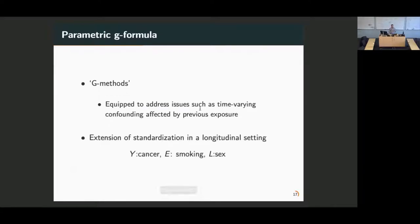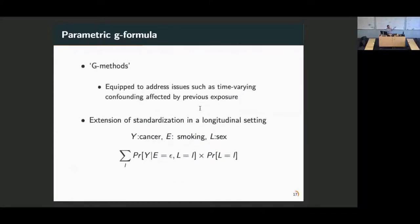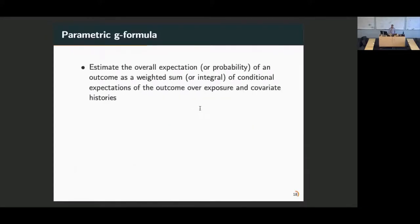In particular, in this example, I'm going to be using the parametric G-formula, which is an extension of standardization in the longitudinal setting. Let's assume that we have an interest about smoking causing cancer and we're concerned about confounding by sex. We just take some kind of weighted average of the probability of Y equals 1 given an exposure within strata of the confounder. We're taking this and bringing it to a time-varying setting with multiple confounders and time points.